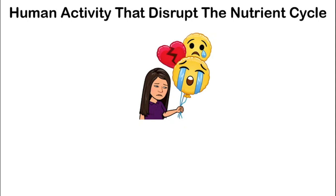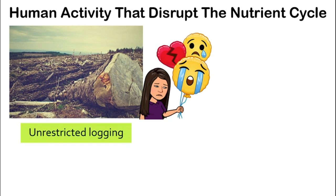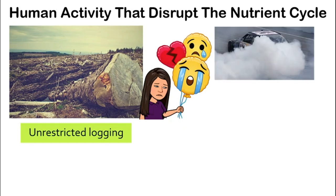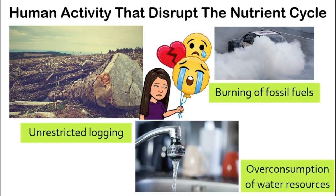The sad fact is there are many human activities that disrupt the nutrient cycle. Unrestricted logging removes the green plants that carry out photosynthesis — the only process that takes away carbon dioxide and gives back oxygen — disrupting the nutrient cycle. Burning fossil fuels also contributes to increasing carbon dioxide in the atmosphere. Additionally, overconsumption of water resources means we take water away too quickly to return it to the environment, causing further problems.